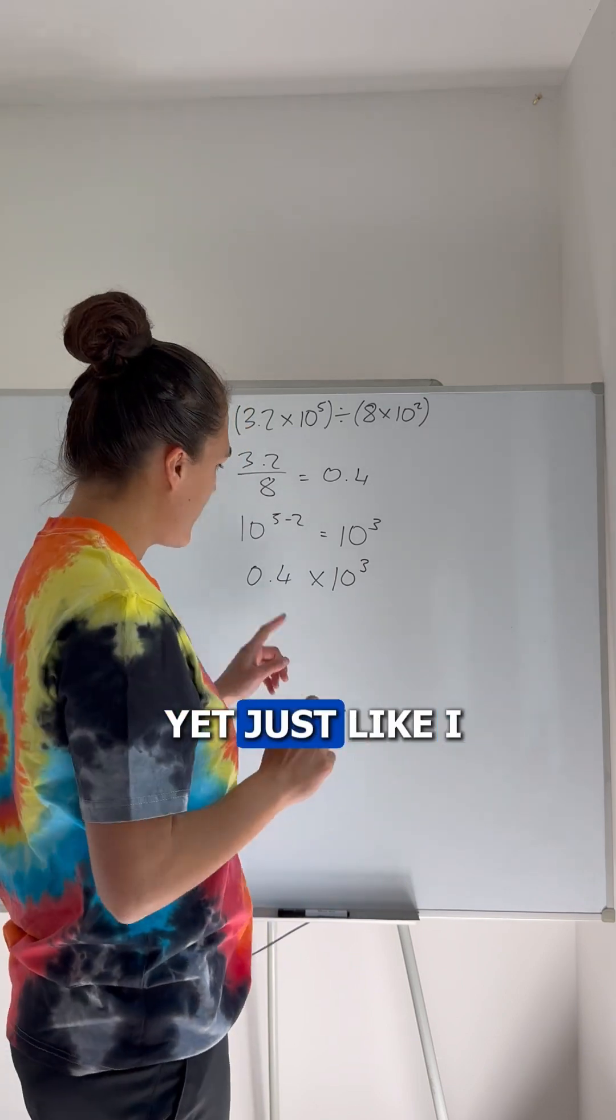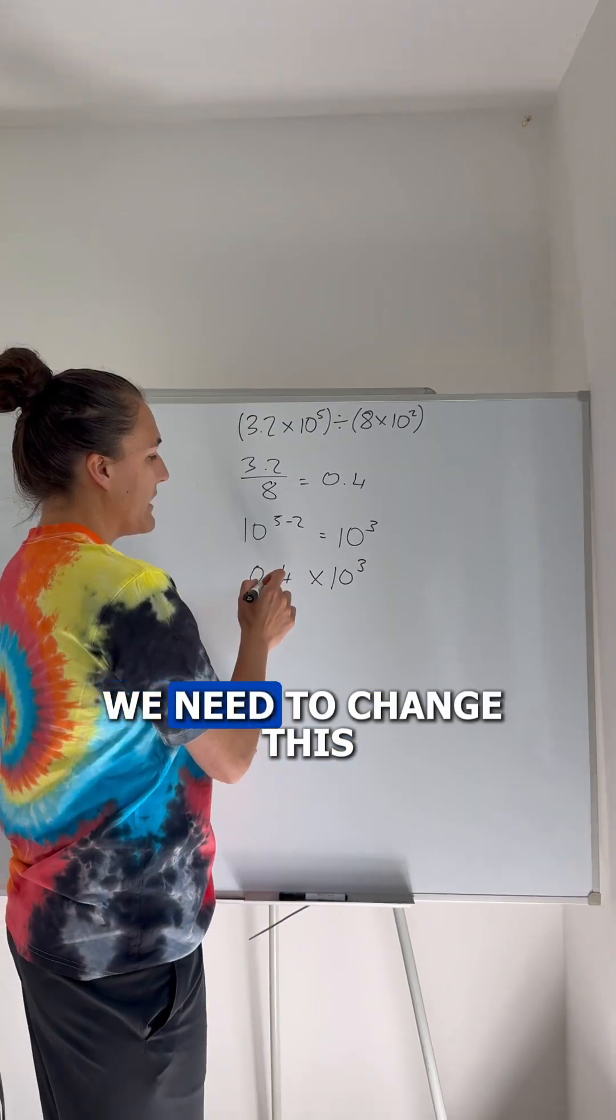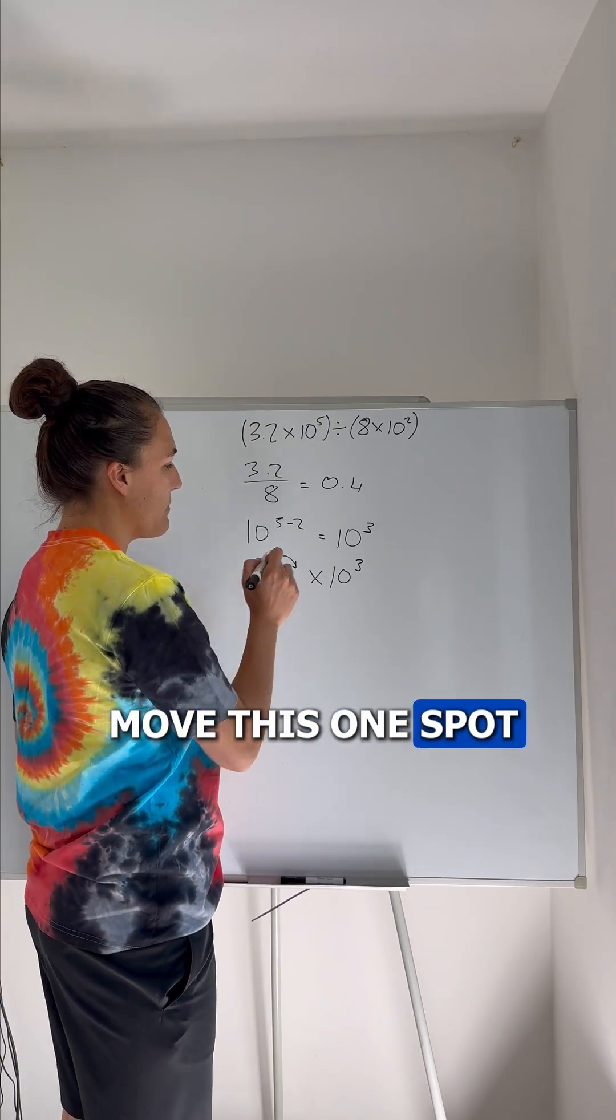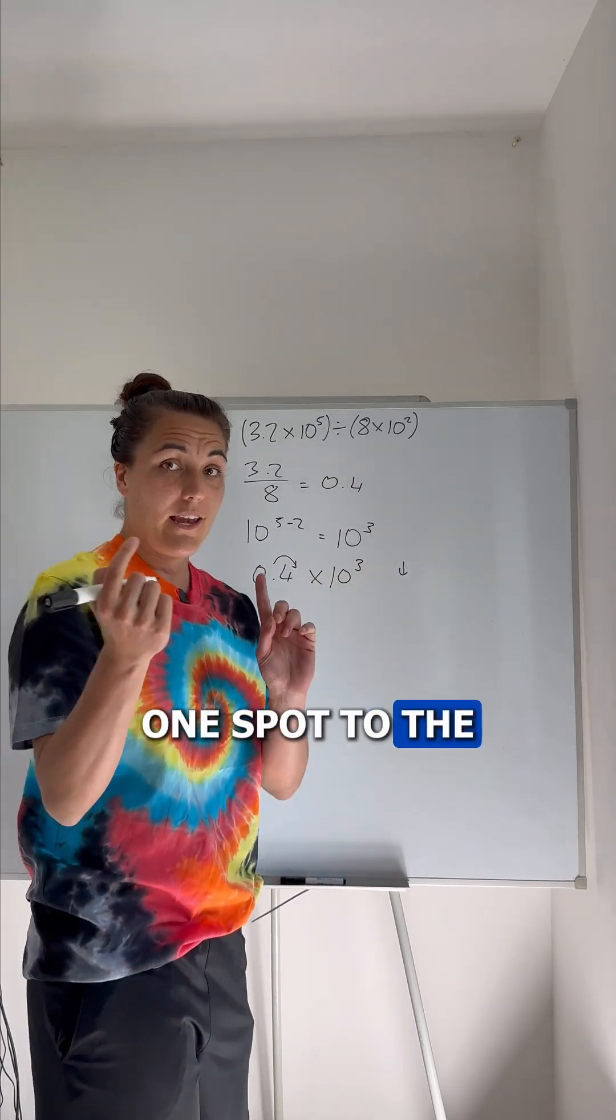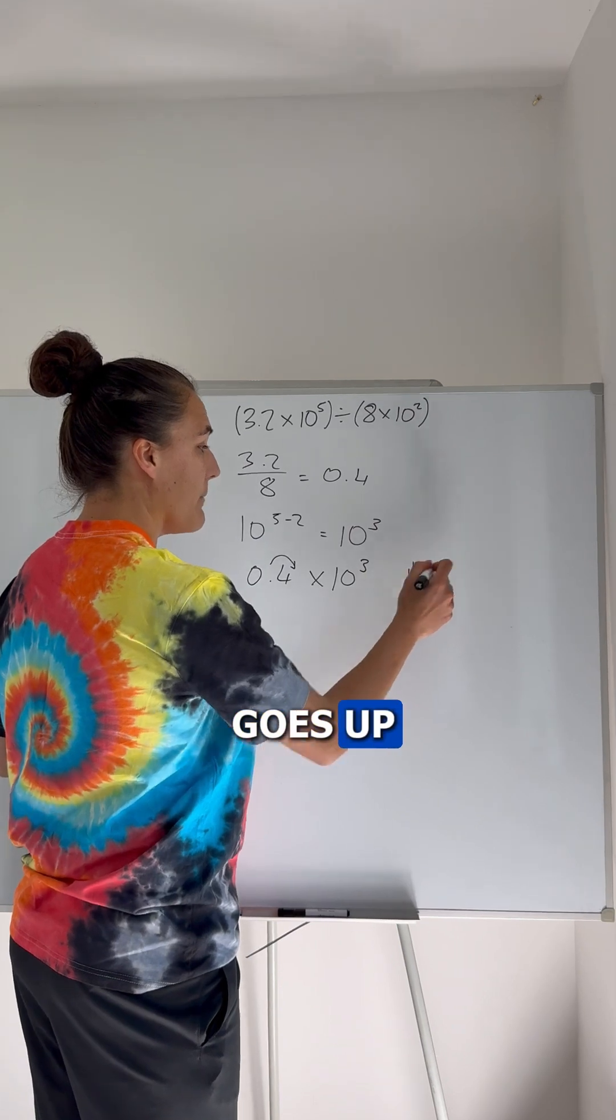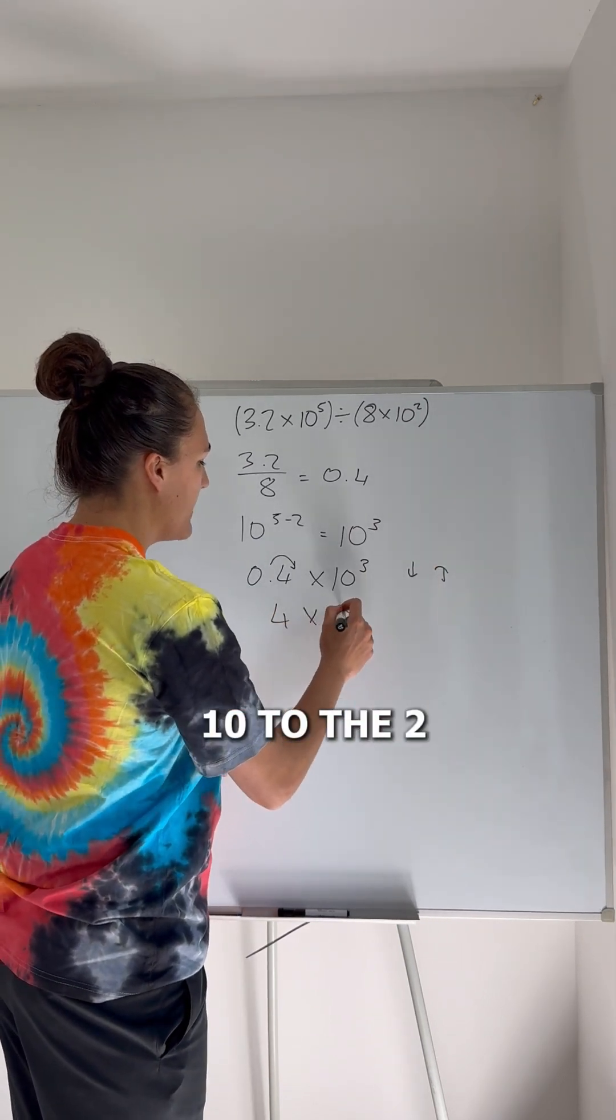We're not done just yet. Just like I told you about the mistake the kids always make, we need to change this. So we need to move this one spot to the right. One spot to the right means this power goes down. One spot to the left means this power goes up. So in this case, we get 4 times 10 to the 2.